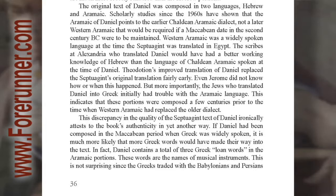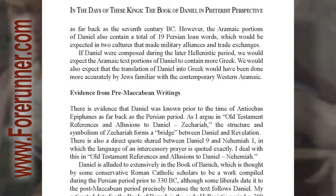If Daniel had been composed in the Maccabean period when Greek was widely spoken, it is much more likely that more Greek words would have made their way into the text. In fact, Daniel contains a total of only three Greek loanwords in the Aramaic portions — these words are the names of musical instruments. This is not surprising since the Babylonians traded with the Greeks and Persians as far back as the 7th century BC. However, the Aramaic portions of Daniel also contain a total of 19 Persian loanwords, which would be expected in two cultures that made military alliances and trade exchanges. If Daniel were composed during the later Hellenistic period, we would expect the Aramaic text portions of Daniel to contain more Greek. We would also expect that the translation of Daniel into Greek would have been done more accurately by Jews familiar with the contemporary Western Aramaic.